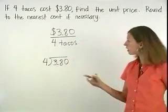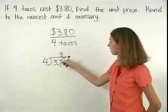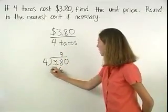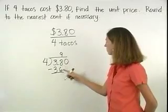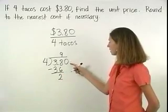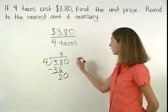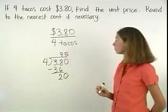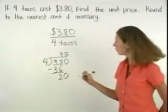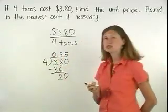4 divides into 38 nine times. 9 times 4 is 36, and 38 minus 36 is 2. Bringing down the zero, 4 divides into 20 five times. So 4 divides into 3.80, 0.95 times.